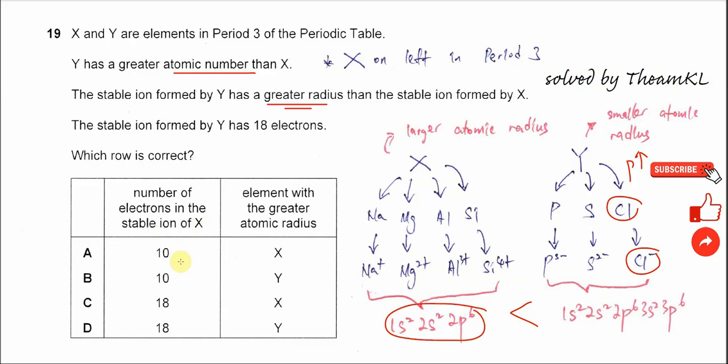This means it's A or B. The element with greater atomic radius must be X, because across a period the atomic radius decreases. So X must have the greater atomic radius compared to Y. The answer is A. That's all, thank you.